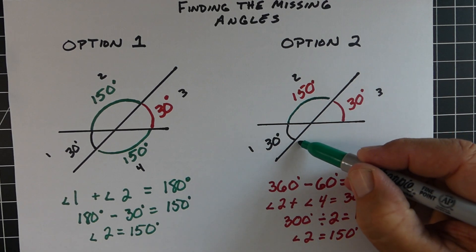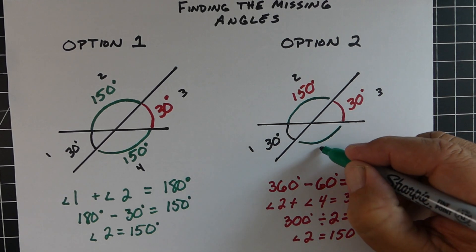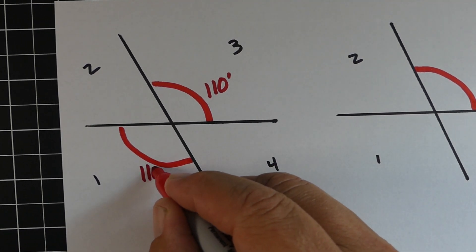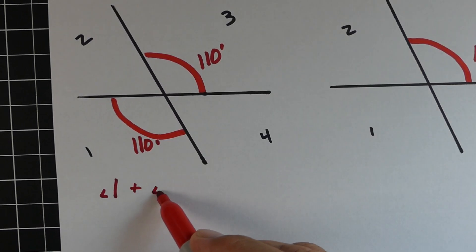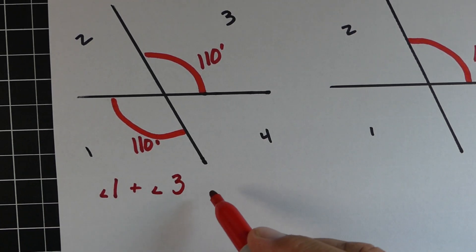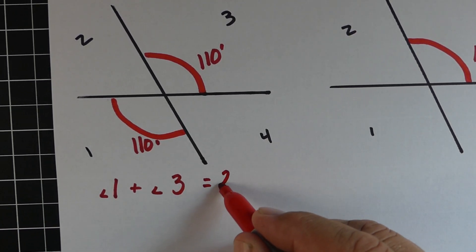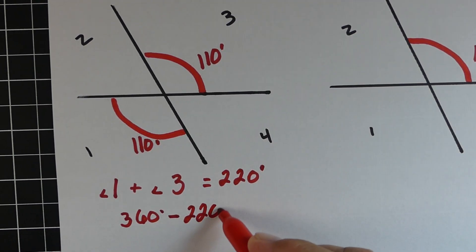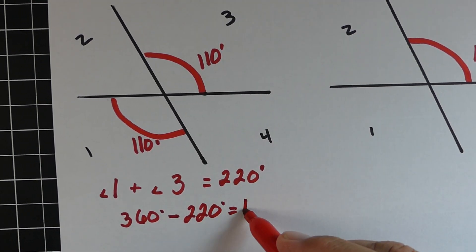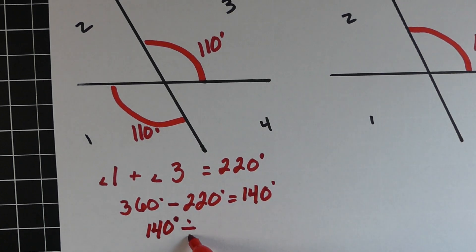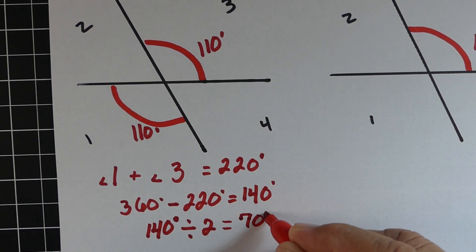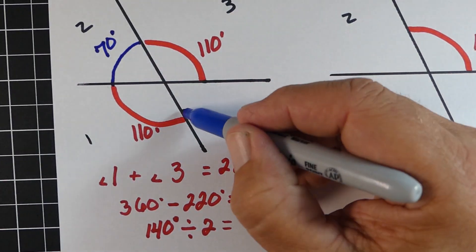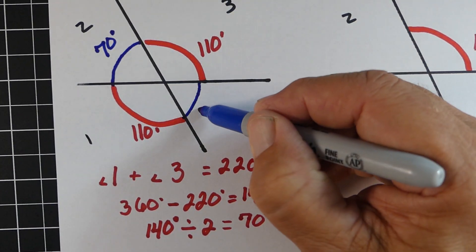Alright, so here are a couple more examples. On these next examples, angle three was 110, so angle one is also 110. And we know that if we add angle one and angle three, that equals 220. So we take 360 minus the 220 we have, and we get 140. We can divide 140 by two and get 70, so angle two is 70 degrees. Angle four will be the same thing because they're vertical.